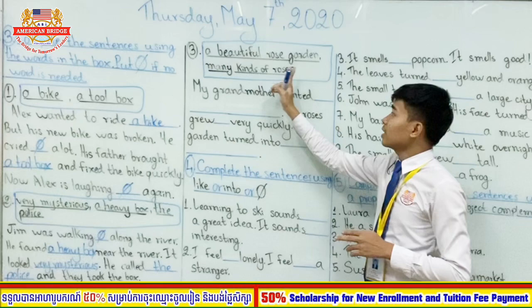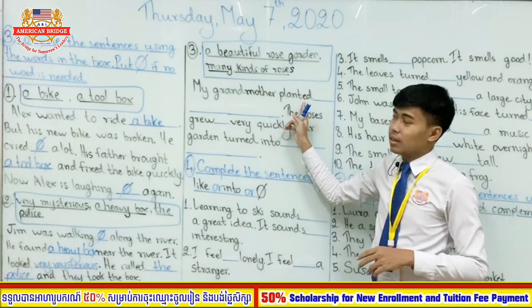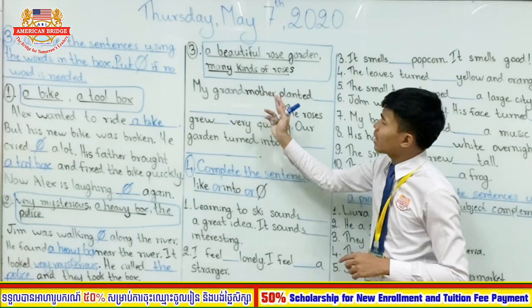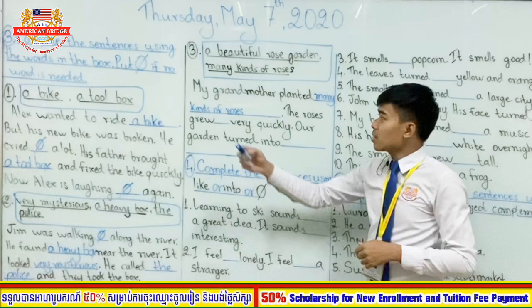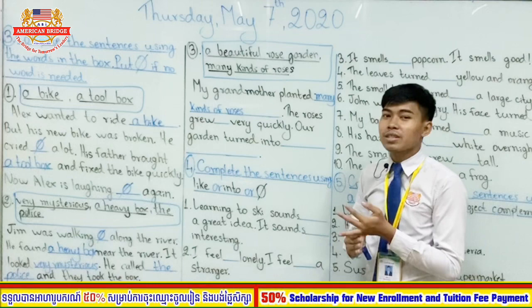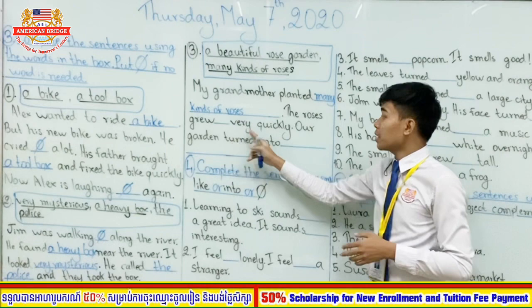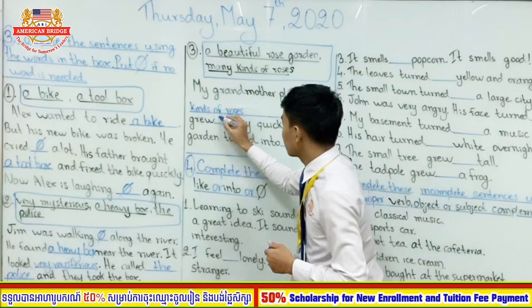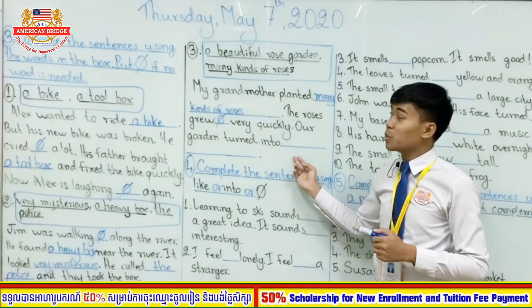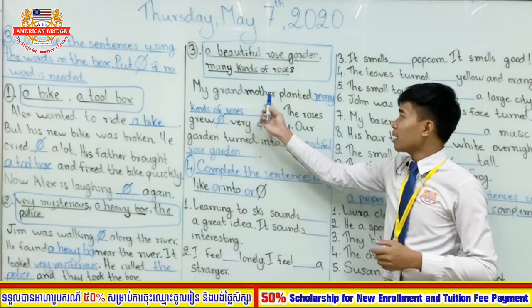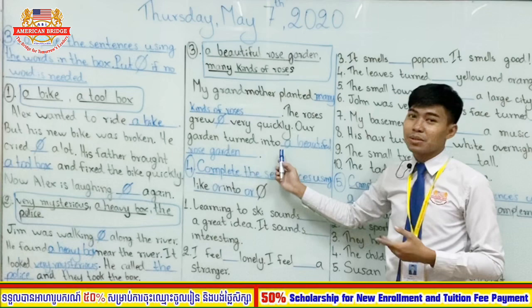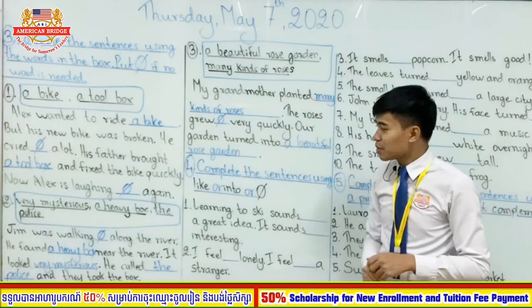Exercise 3, Number 3: the two phrases are 'a beautiful rose garden' and 'many kinds of roses.' My grandma planted many kinds of roses. The roses grow very quickly — no word needed, 'none.' Our garden turned into a beautiful rose garden. Full sentence: My grandma planted many kinds of roses. The roses grow very quickly. Our garden turned into a beautiful rose garden. That finishes Exercise 3.